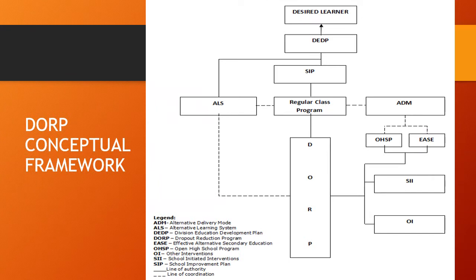This is how the DORP conceptual framework looks like. The framework represents how the DORP supports the regular class program to attain the goal of the SIP and the DEDP in producing a functionally literate learner or graduate. It also shows the relationship of the DORP to the alternative learning system, or ALS.